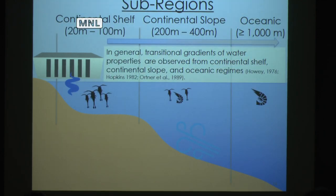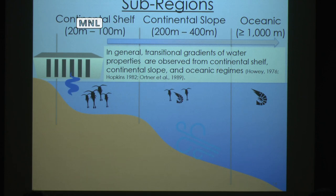Our study region has three major sub-regions which exhibit transitional gradients of water properties. The continental shelf is heavily coastal-influenced with river discharge and upwelling events — a lot of nutrients here, so high zooplankton abundances are seen. The continental slope is more transitional and serves as a zone between the shelf and the more oligotrophic open ocean, or oceanic gulf.